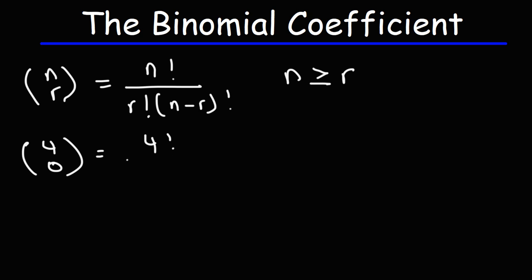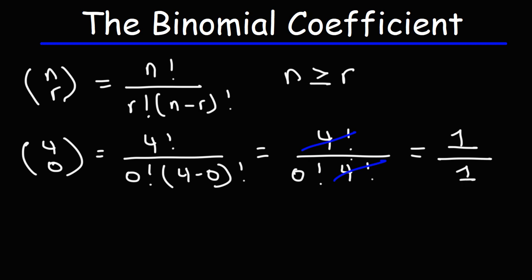In this example, n is 4, r is 0, and then we have n minus r, that's going to be 4 minus 0. So we have 4 factorial over 0 factorial times 4 factorial. This will cancel. 4 divided by 4 is 1. 0 factorial is also 1. So the final answer is simply 1.